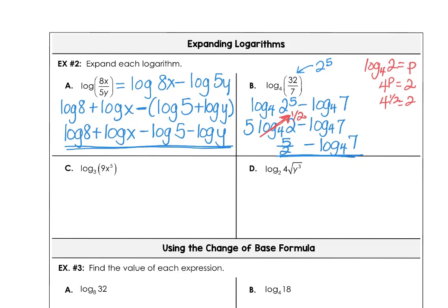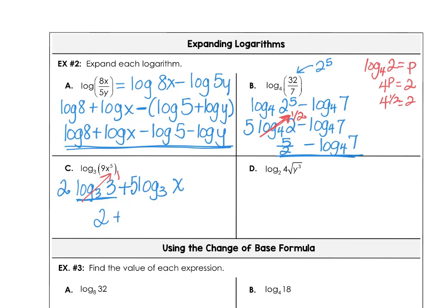On part c, log base 3 of 9 can be rewritten as log base 3 of 3 squared, which puts the 2 in front. Similarly, log base 3 of x to the 5th lets us move the power 5 out as a multiplier. So we have 2 times log base 3 of 3 plus 5 times log base 3 of x. Since log base 3 of 3 is 1, we get 2 times 1 plus 5 log base 3 of x, which equals 2 plus 5 log base 3 of x. That's expanded and simplified.